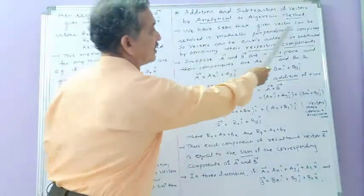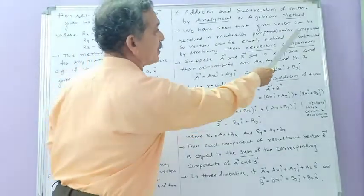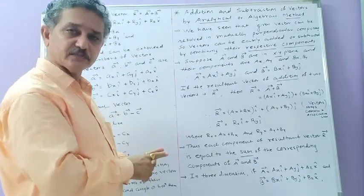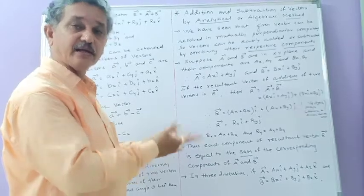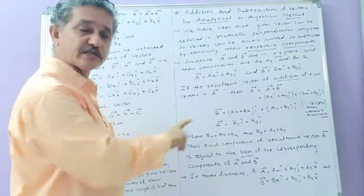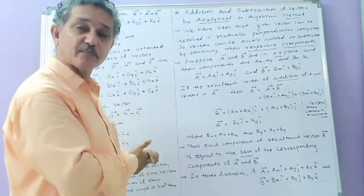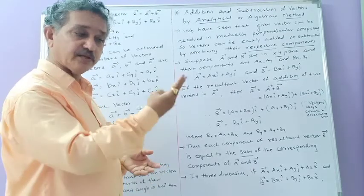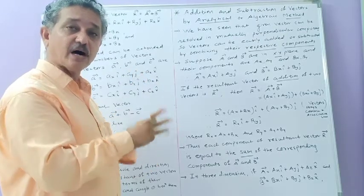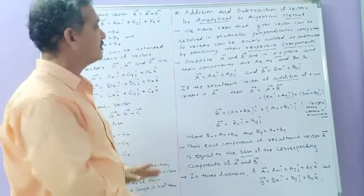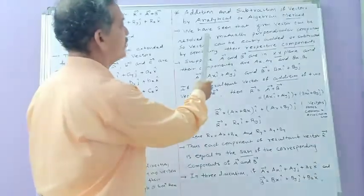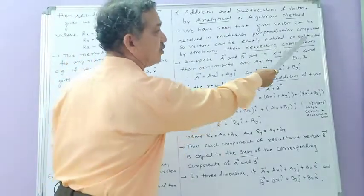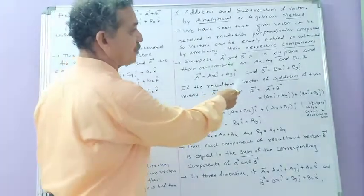The given vectors can be resolved into mutually perpendicular components. In two dimensions, vector A is resolved into components Aₓ and Ay, which are perpendicular because the x-axis and y-axis are perpendicular. In three dimensions, the three components AₓI, AyJ, and AzK are also mutually perpendicular to each other. So vectors can be easily added or subtracted by combining their respective components.